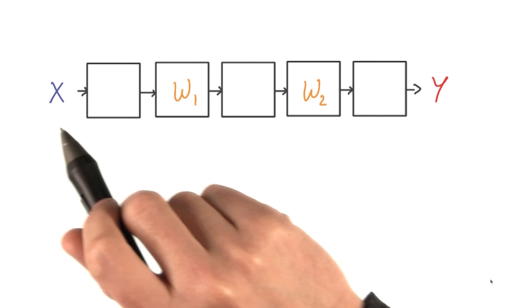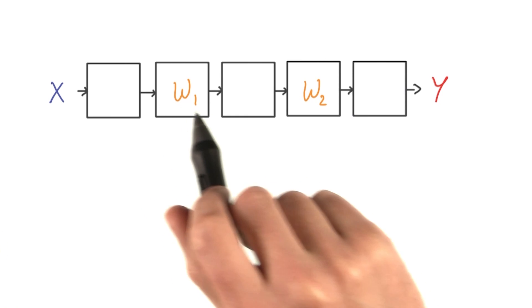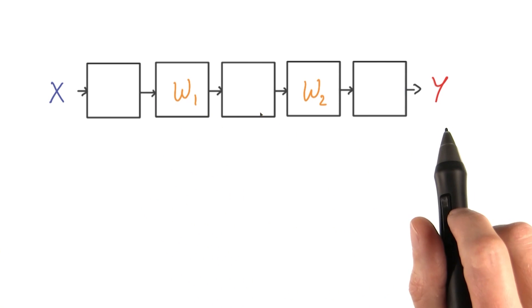Here's an example. Imagine your network is a stack of simple operations, like linear transforms, ReLUs, whatever you want.